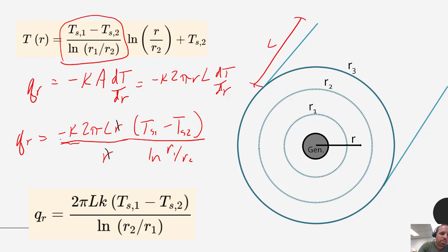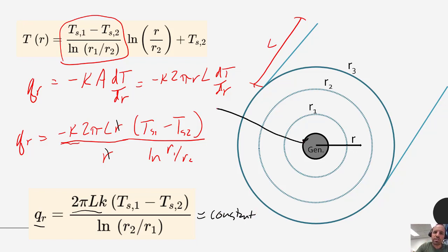So q_r is equal to 2πLk times our temperature difference divided by ln(r2/r1), and every single term in that equation is a constant. The flow of heat from inner to outer wall as a function of r is just constant. The heat may be spread over larger and larger areas — meaning the flux decreases — but the actual flow of heat is constant. This means we can apply the concept of thermal resistance to cylindrical systems, just as we did for plane wall systems.